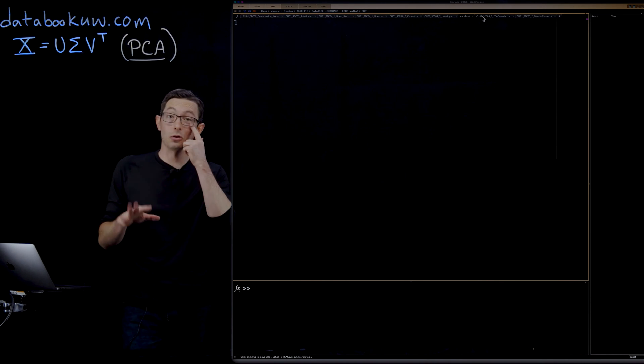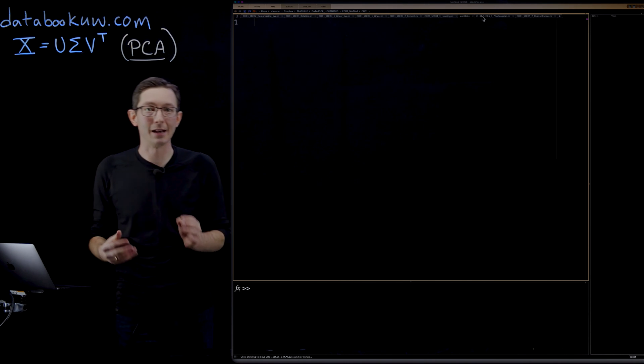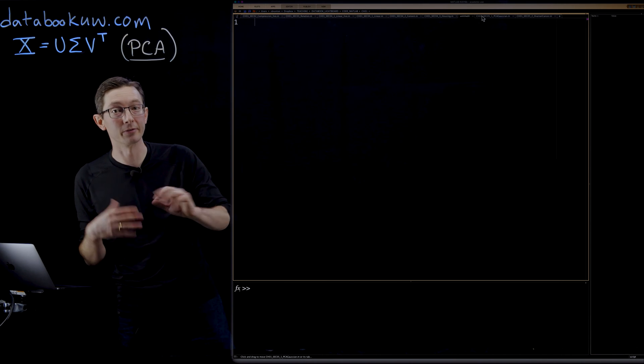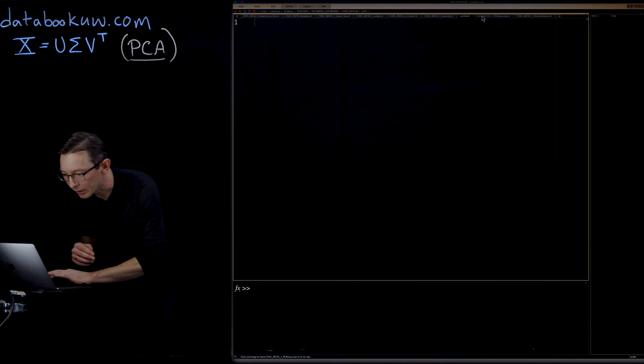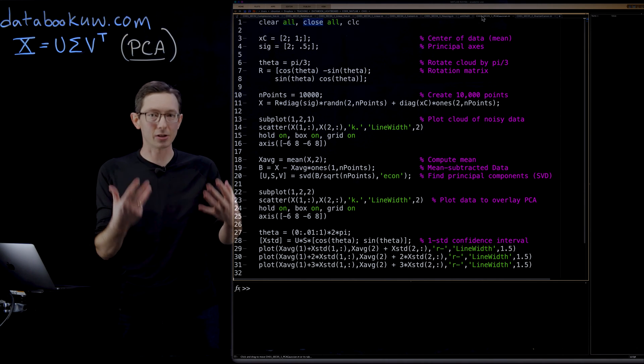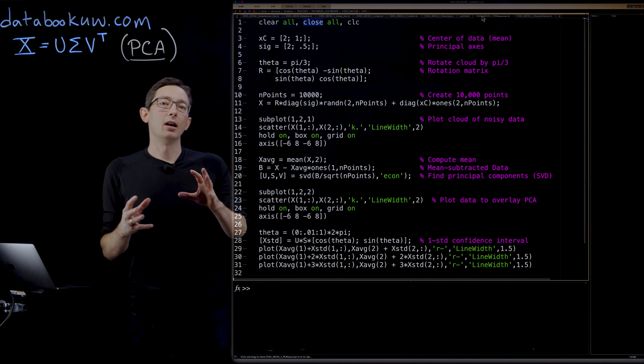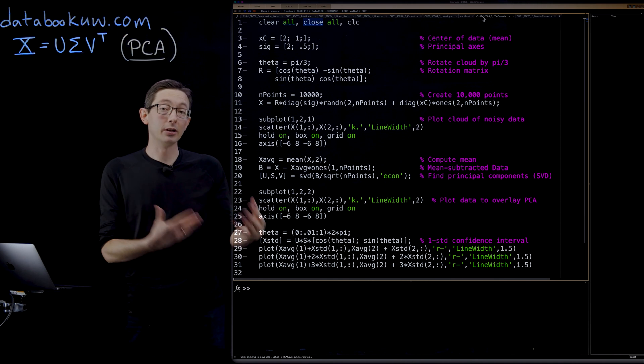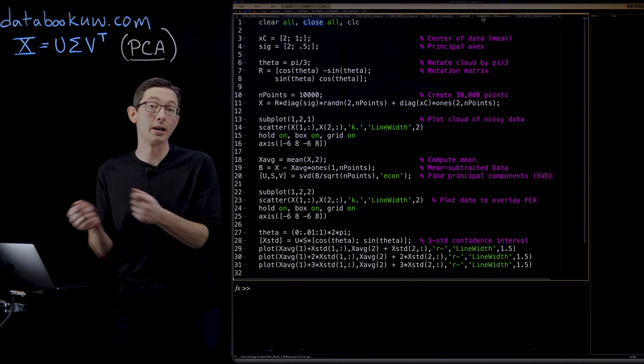You could teach a whole course on PCA. There's over a hundred years of papers and books written on this. I'm just going to scratch the very tip of the surface in this lecture. So a couple of data sets. I'm going to work with two data sets. One of them is going to be a manufactured data set where I have some random variation in my data, and then the other one is going to be a real life data set with genetic markers that correlate to ovarian cancer.